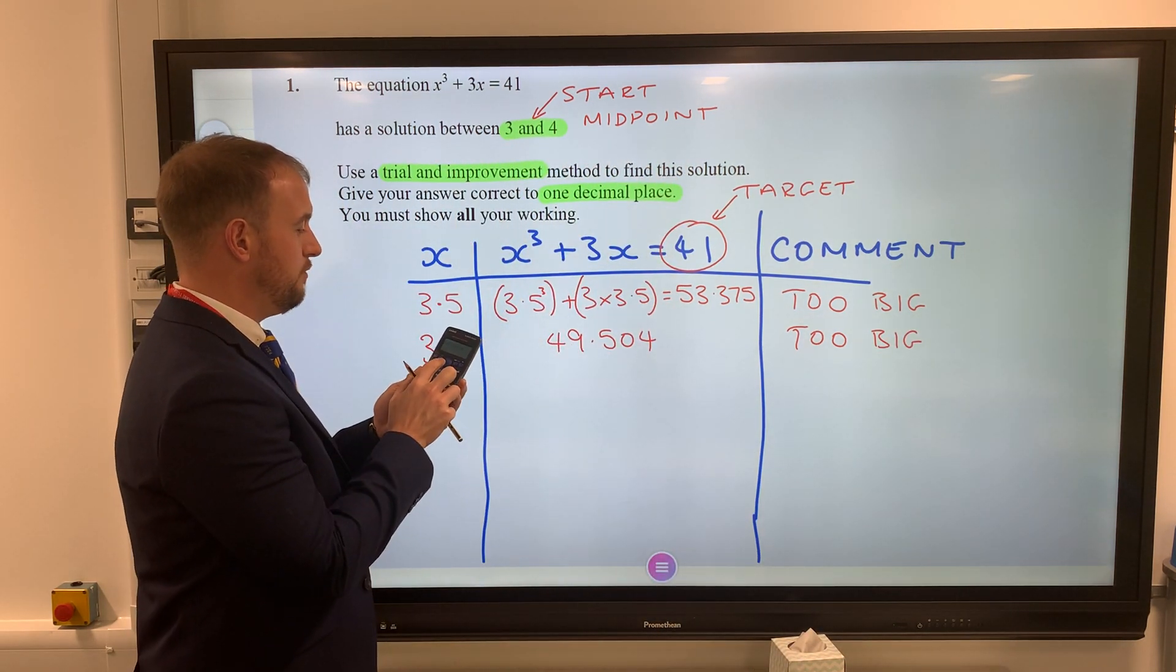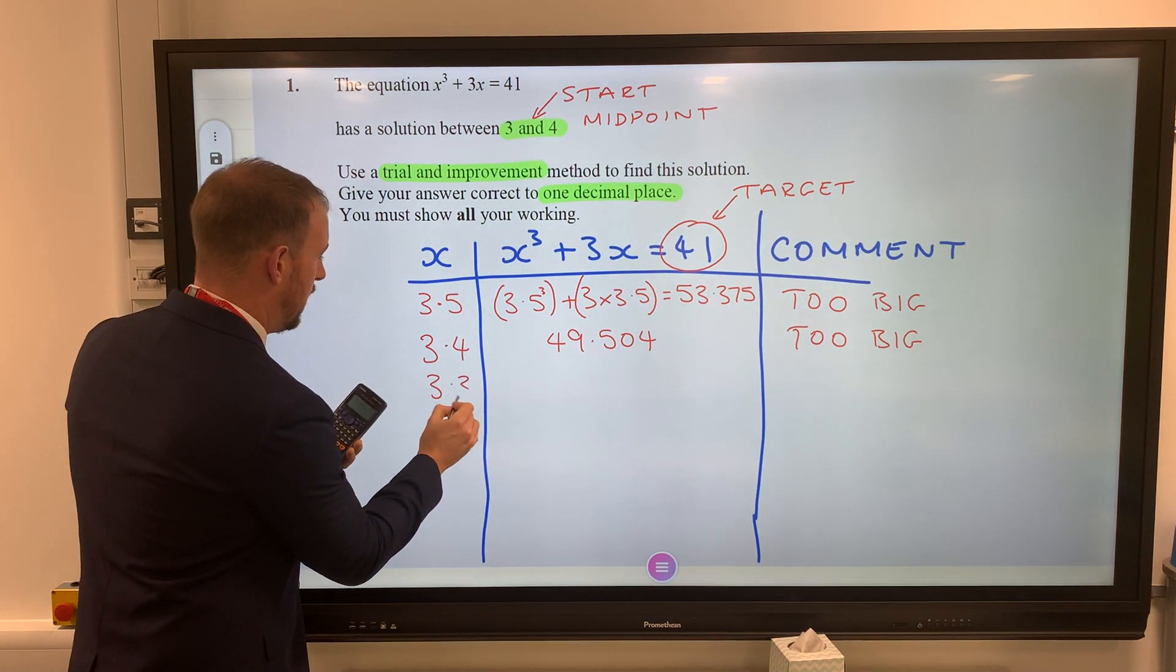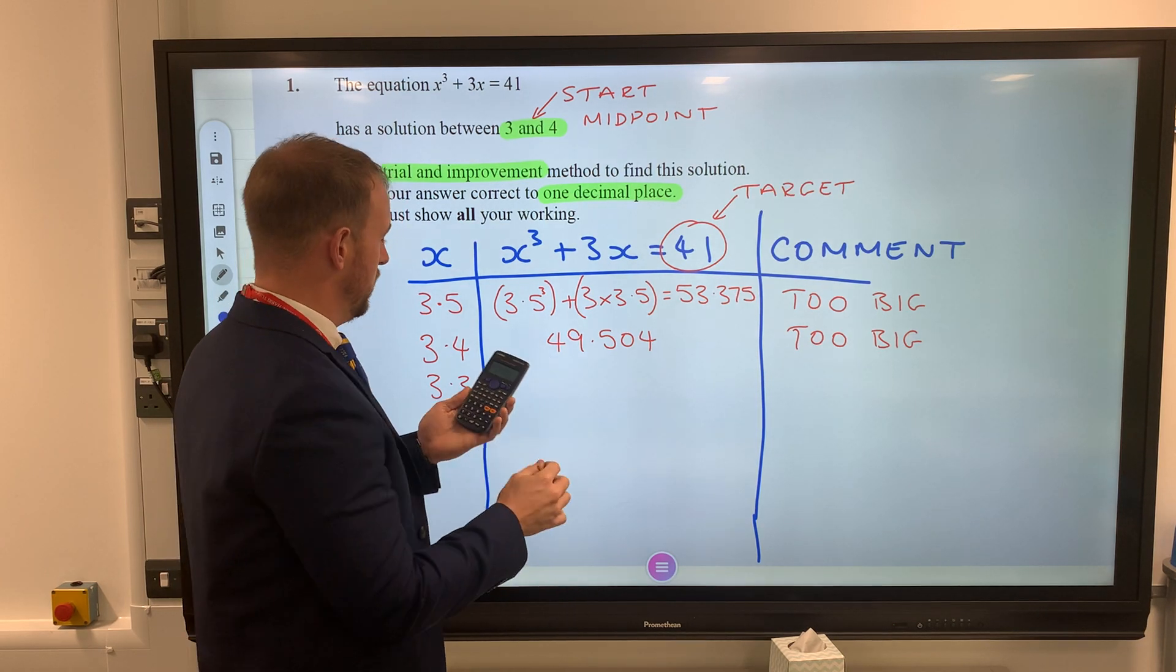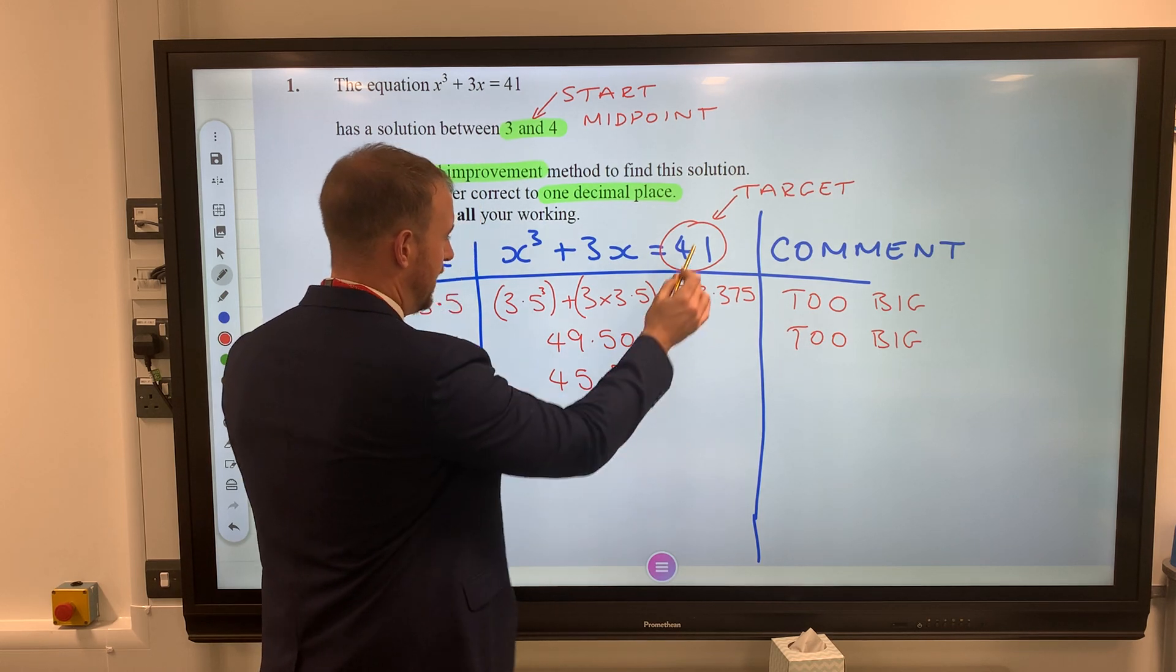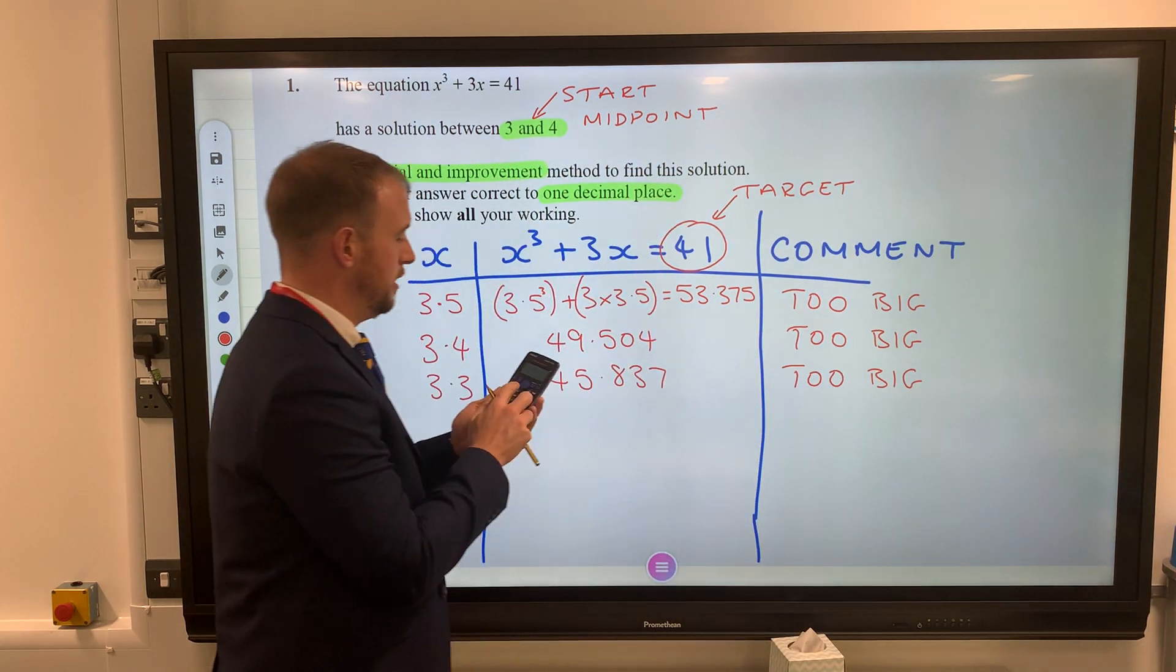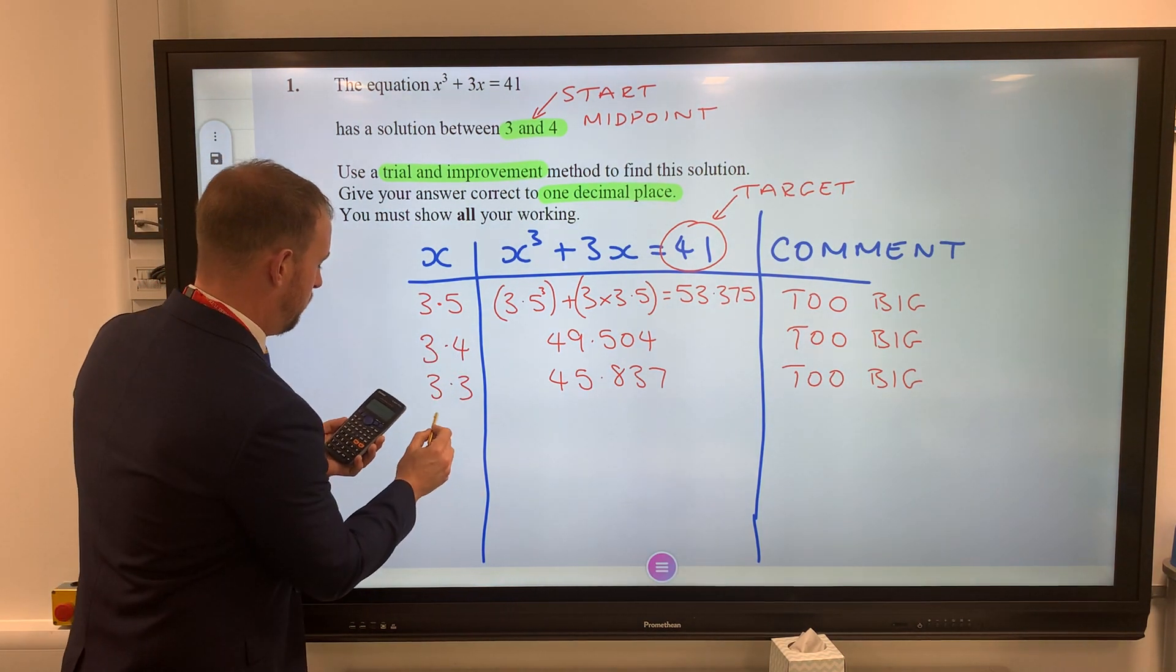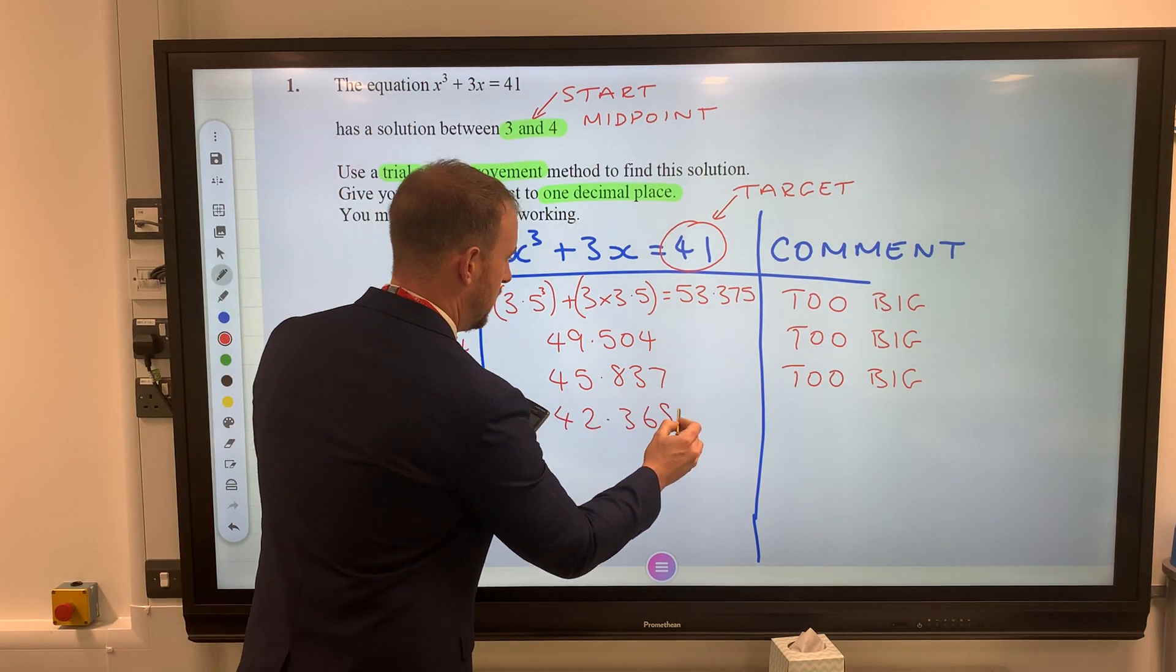Let's try 3.3. I am writing down all of my steps - every single one of these I'm writing down because they're worth the marks. When x is 3.3, we are looking at 45.837. Again too big, but you can see we are getting closer. Let's change the 3.3 for 3.2 this time. Our answer is 42.368 - we're getting closer.